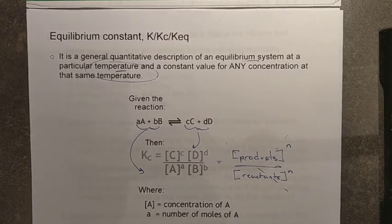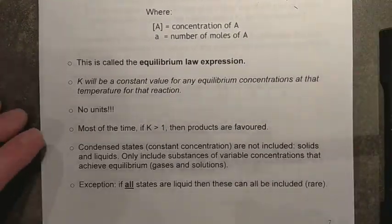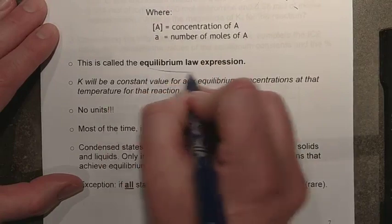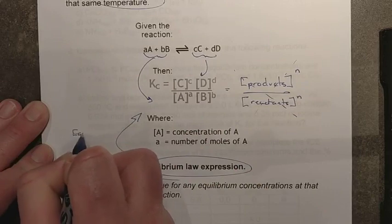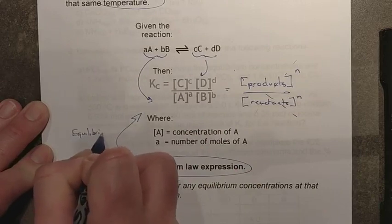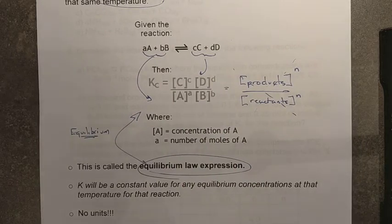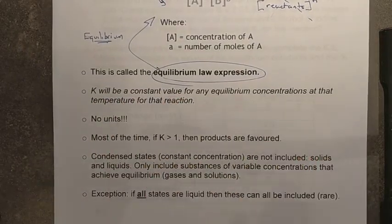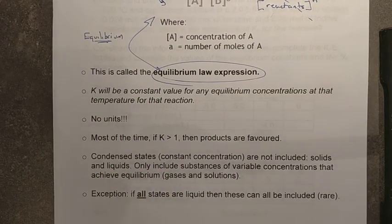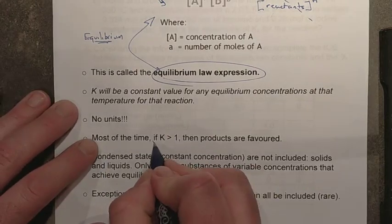There are some slight and subtle issues with this one. So this is known as your equilibrium law expression. This means that these numbers that you put in here can only come from the equilibrium line of your ICE table. You must have equilibrium numbers before you can do this. K is a constant value for any set of equilibrium concentrations, so long as the temperature is constant throughout. If you heat things up or cool things down, K will change. Again, no units.